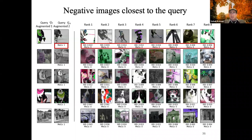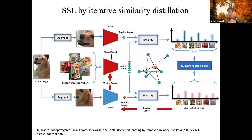What we do instead in ISD — Iterative Similarity Distillation — is use similarity as a label for a regression task. The similarity between the query and a nearby image is much higher than the similarity between the query and a dissimilar image. MoCo treats this as a binary classification task, but ISD uses the actual similarity as a continuous label.